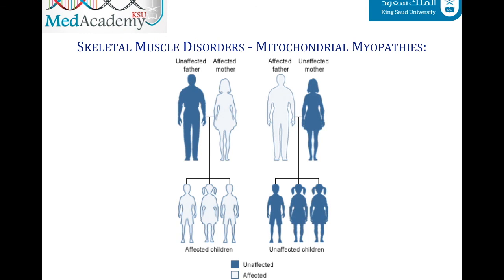Mitochondrial myopathies result from mutations in either the mitochondrial or nuclear genomes. Those caused by mitochondrial mutations show a maternal inheritance pattern because mitochondria are inherited from the mother — so an affected mother will pass the disease to her children, while an affected father will not.